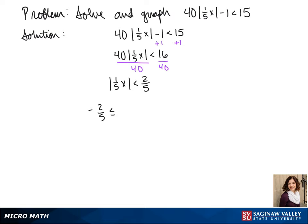Because the absolute value of 1 fifth x has to be less than 2 fifths, it could be anywhere from negative 2 fifths to positive 2 fifths. To get rid of all these denominators of 5, we're going to multiply each part by 5.